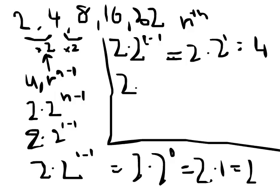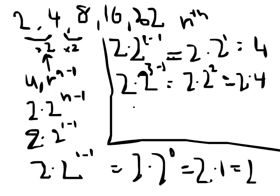So, we can try that once more. 2 times 2 to the power of 3 minus 1, which gives us 2 multiplied by 2 to the power of 2. 2 to the power of 2 equals 4. So, 2 times 2 squared equals 2 times 4, which equals 8.